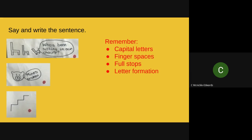Who's been sitting in our chairs, growled the bears. We've got the first part of the sentence there to help you so you can copy that. We've got a question mark because it's a question, then 'growled the bears' and then a full stop. Say the sentence with me — who's been sitting in our chairs, growled the bears. Pause the video while you write that sentence down in your books.